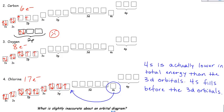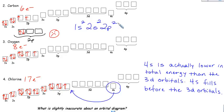Carbon — you could shorten this up and say 1s2, the 1s orbital has 2 electrons. Next comes the 2s with 2 electrons, and then the 2p has 2. So these little superscripts — 2, 2, and 2 — should add up to the total number of electrons. There are 6.